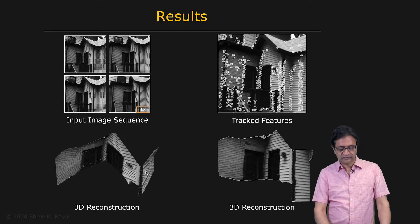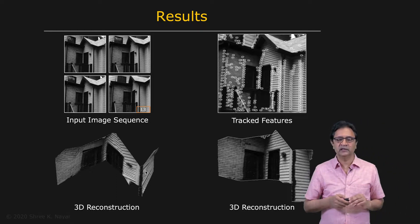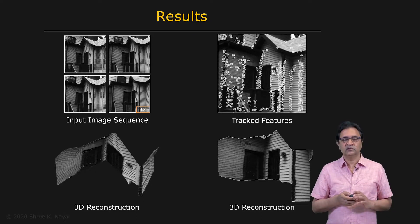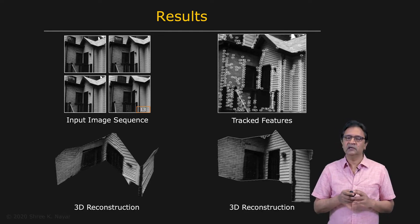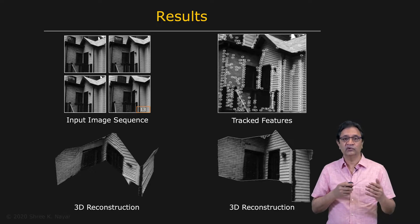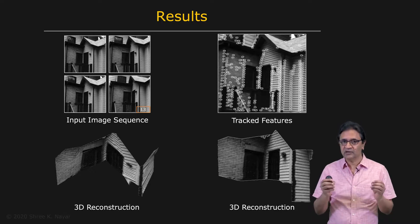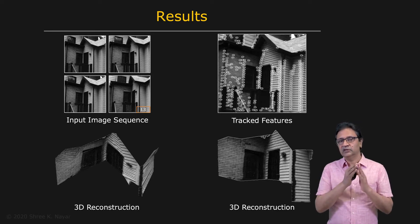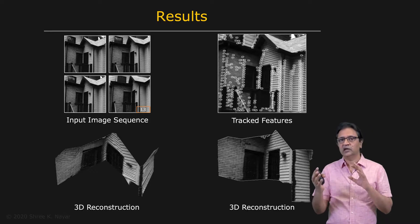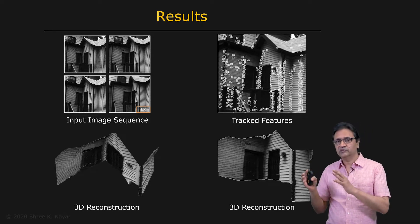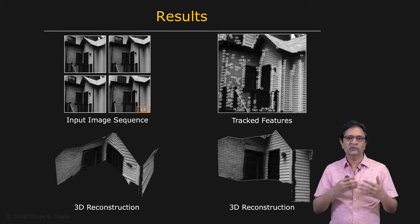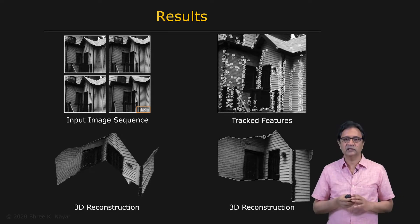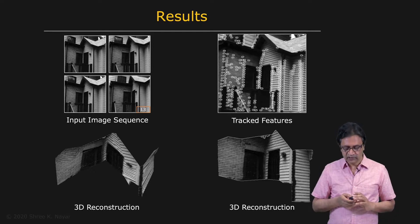These are very early, essentially the first results on structure from motion using the factorization method. Since then, many of the assumptions have been relaxed — it's been extended to perspective cameras, cameras with changing focal length (zooming effects), and more sophisticated feature processing. The original algorithm assumes each feature is seen throughout the entire video sequence, but features can appear, disappear, and reappear, so more sophisticated techniques have been developed. The core ideas, however, began with the Tomasi-Kanade algorithm.